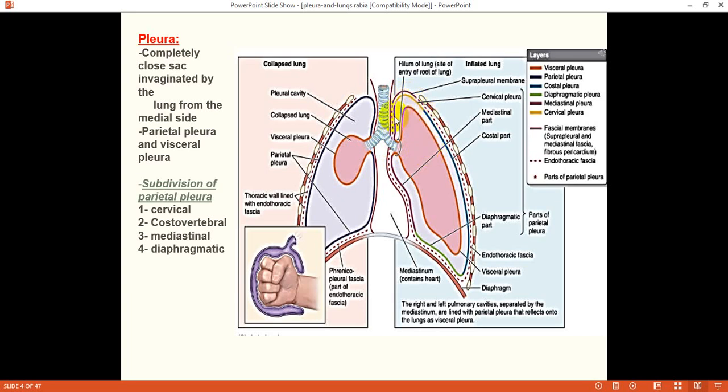Parietal pleura is lining all the structures lying outside and on the periphery of the pleural cavities. On the medial side, the parietal pleura lines the mediastinum and makes the lateral margin of the mediastinum. Here it is called the mediastinal pleura.